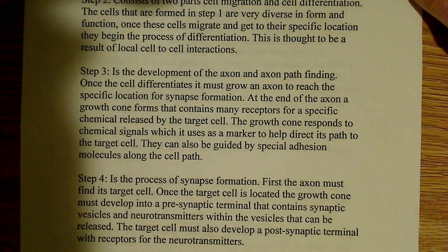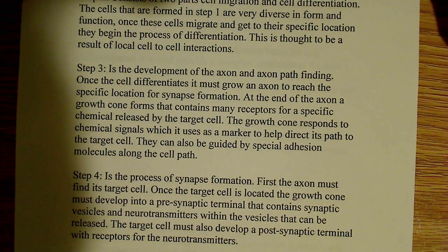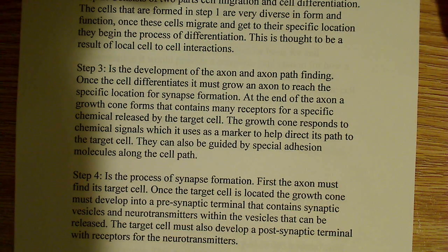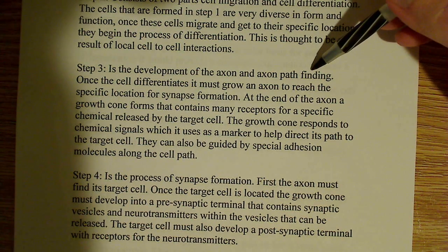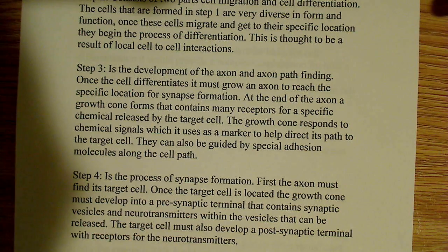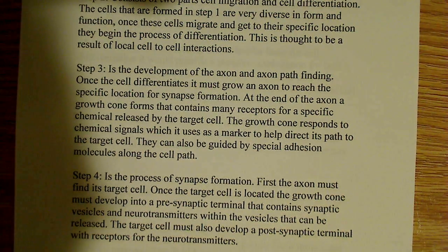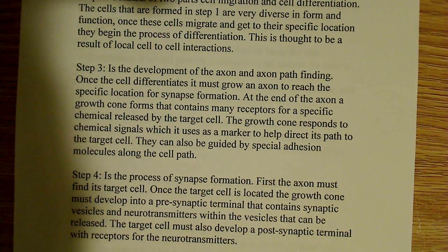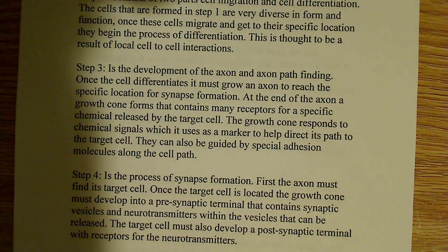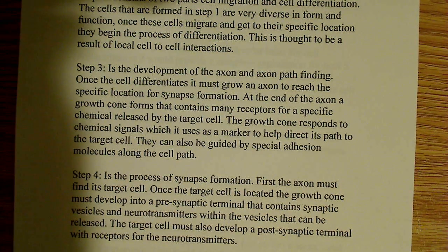Step three is the development of the axon. At this point we have to develop an axon, along with the concept of axon pathfinding. The axon has to make a connection somewhere — it has to form a synapse and needs to find a place to form that synapse. So once the cell differentiates, it must grow an axon to reach that specific location for synapse formation.